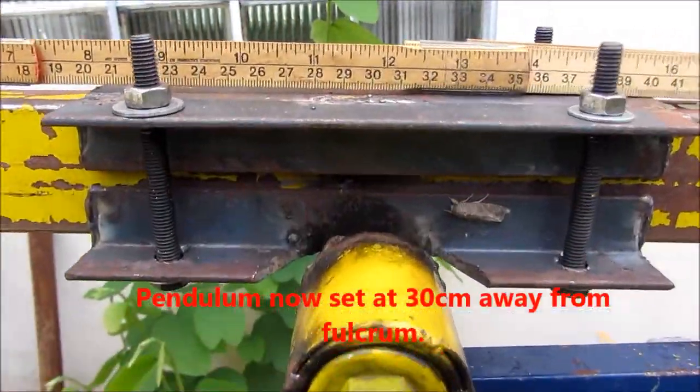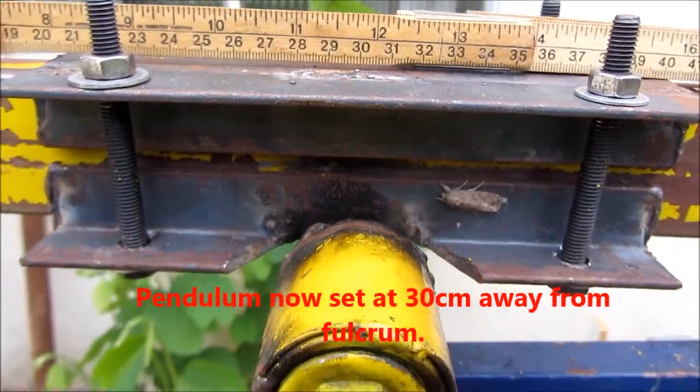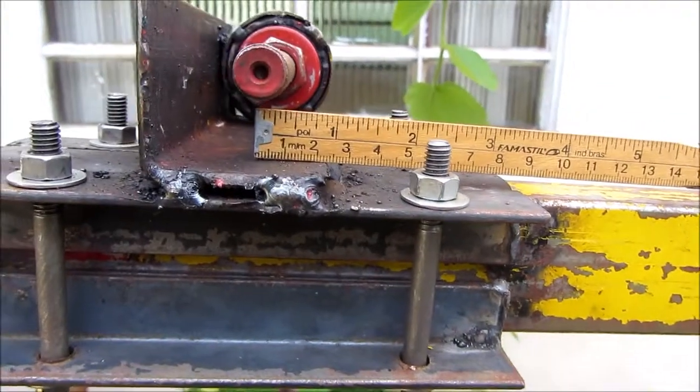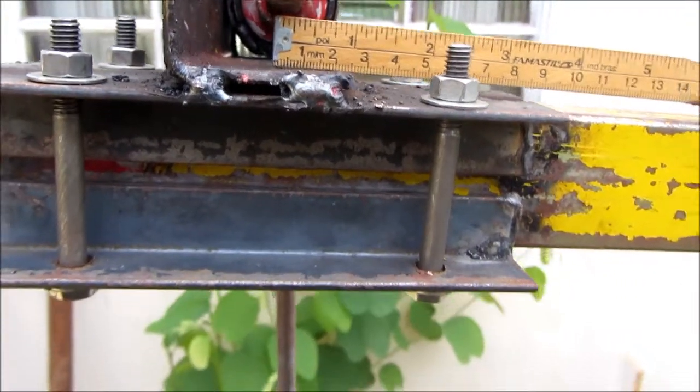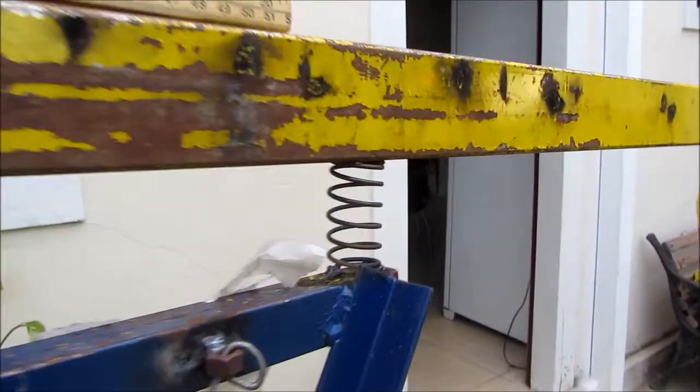Now we're in the same conditions again, but with the pendulum on the right-hand side 30 centimeters away from the fulcrum. So the mass acting on the left-hand side is going to be smaller, and on the right-hand side our mass is going to be greater.